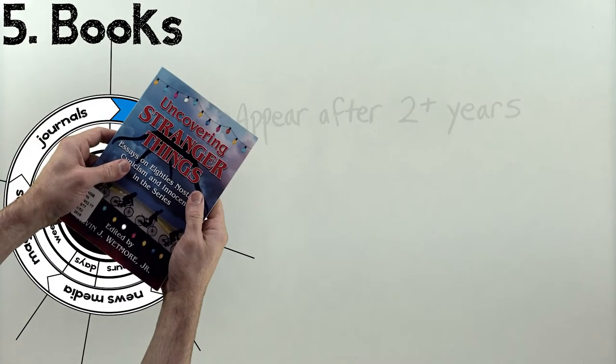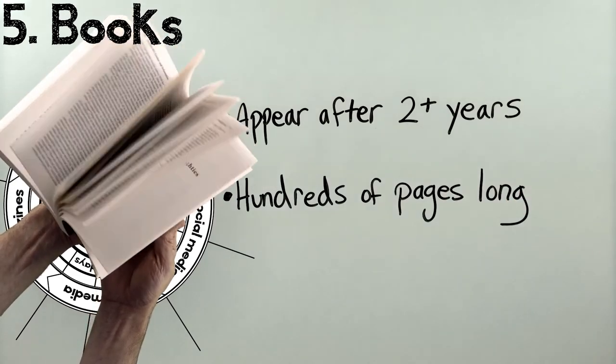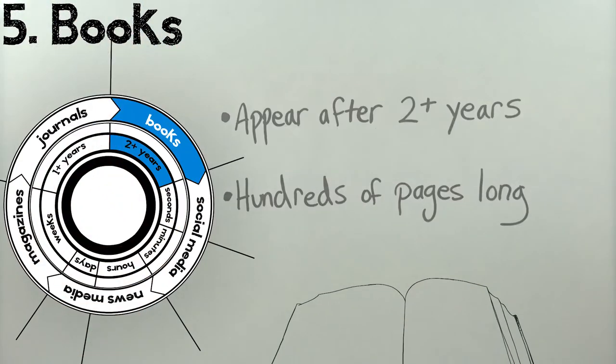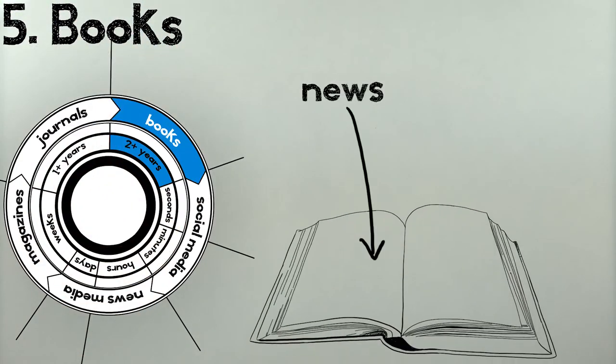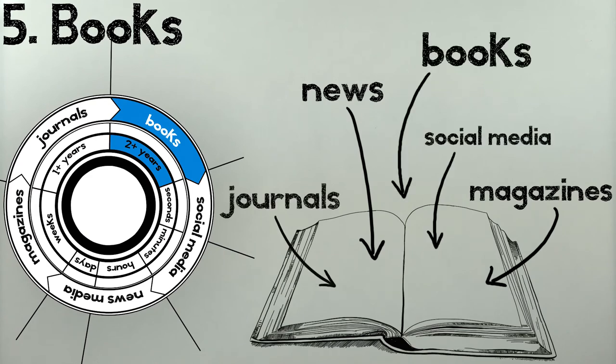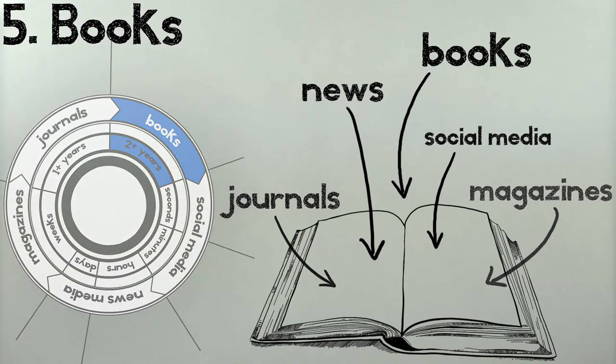Books, spoiler alert, are hundreds of pages long, so they're able to make big, overarching arguments that draw from all the stages of the information cycle. They do for the entire cycle what magazines do for the news, but way more thoroughly. They interpret the event and say something thoughtful about it as a whole.